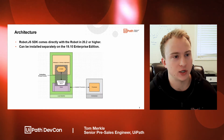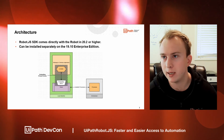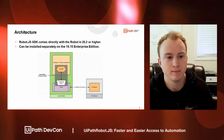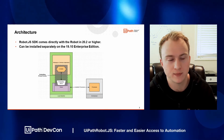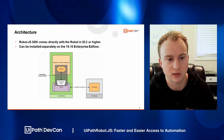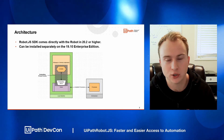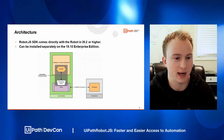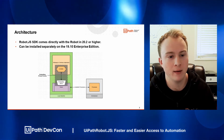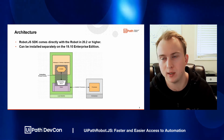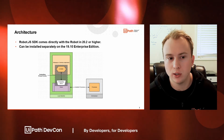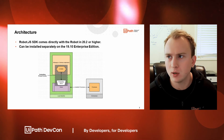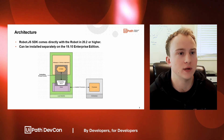A brief comment on the architecture: RobotJS comes directly with any robot in version 20.2 or higher, and anything previous can be installed separately. The way this works is that you have your web page or desktop app — essentially whatever application is running the JavaScript. The SDK is embedded in that application, and it interfaces with the robot through the JavaScript add-in that comes out of the box with your robot. The robot then communicates with Orchestrator to pull processes, trigger things, and do anything a normal robot would do. Essentially, anything your robot can do, you can do via the SDK in the web app.